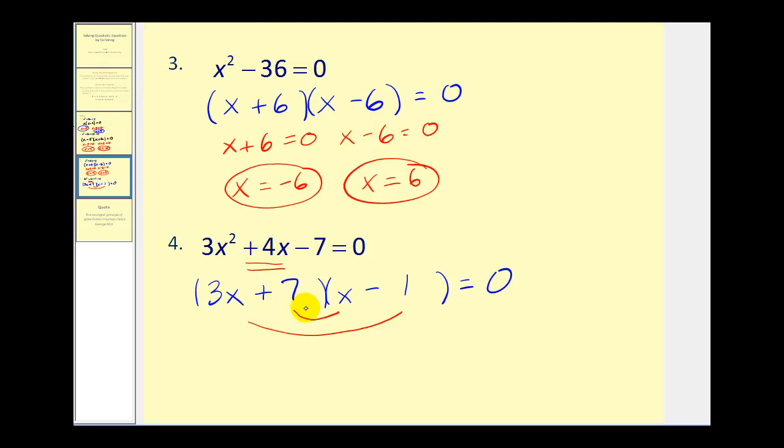Okay, so this product is equal to zero. Therefore, three x plus seven must equal zero. Or, x minus one must equal zero. So, on this problem, if we subtract seven and then divide by three, we'd have x equals negative seven-thirds. Here, if we add one, we have x equals one.